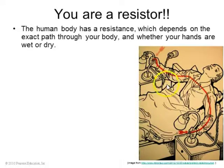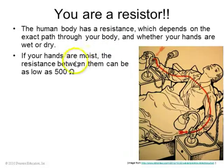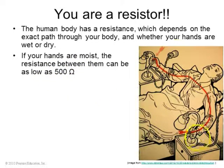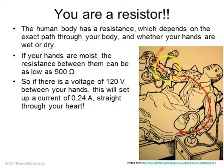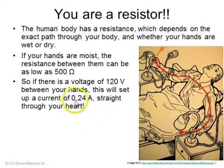You are a resistor. The human body has some resistance, which depends on the exact path of electricity through your body and whether your hands are wet or dry. If your hands are sweaty, the resistance between your two hands can be as low as 500 ohms. Imagine you grabbed two broken light bulbs — one at plus 120 volts and the other at zero volts. That would be 120 volts across your body. With a resistance of 500 ohms, using Ohm's law: 120 volts divided by 500 ohms is 0.24 amps, which would go right through your heart — not a good thing.